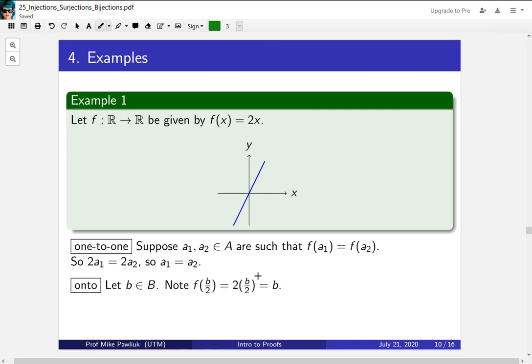For onto, pick any y value, call it b. Now what's the input that gives us that? Well, it's b/2. So in this case, we have something that's both 1-to-1 and onto, so it's a bijection.